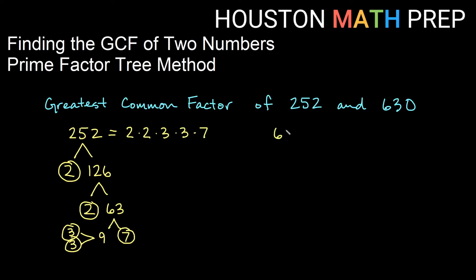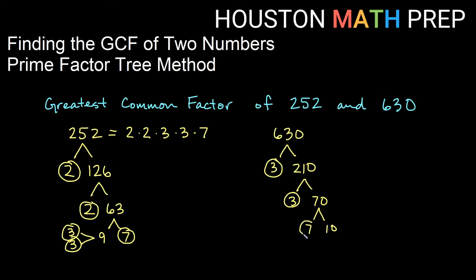Now let's do the prime factorization of 630. I can see that it's divisible by three, so three times something gives me 630. 630 divided by 3 is 210. Three is prime; 210 is not. Breaking down 210, it's divisible by three again: 210 divided by 3 gives me 70, so three times 70. The three again is prime; the 70 is not. So breaking 70 down further, I get seven times ten. The seven is prime, and ten breaks down into two times five — both of which are prime. So the prime factorization of 630 is one copy of two, a pair of threes, a five, and a seven: 2×3×3×5×7.